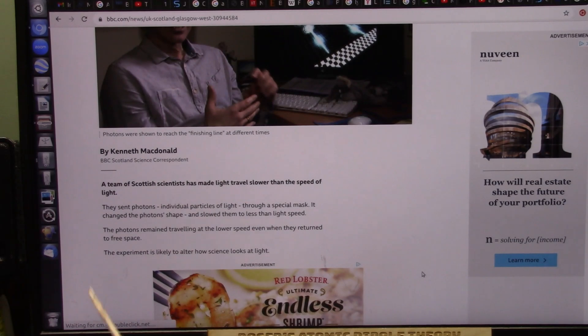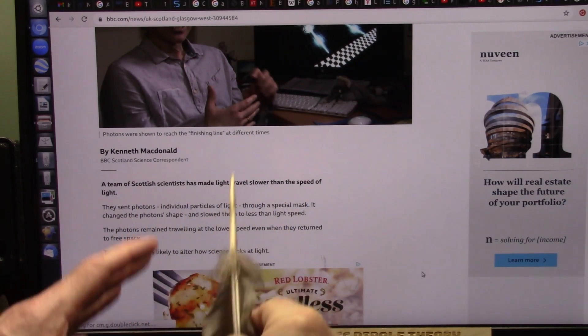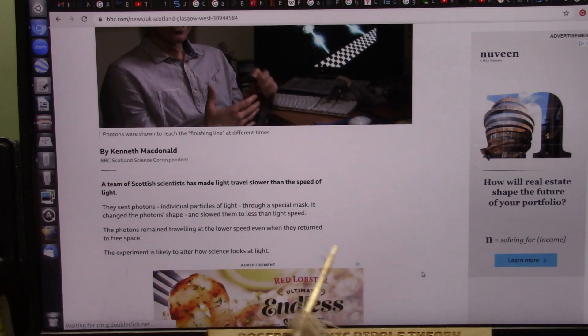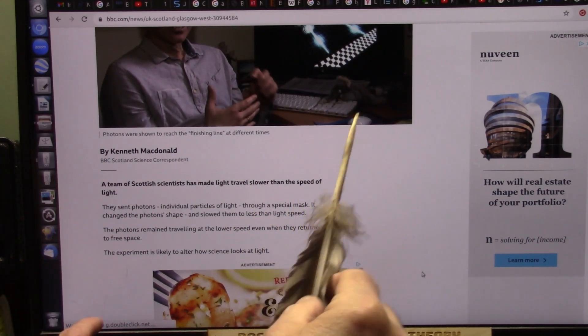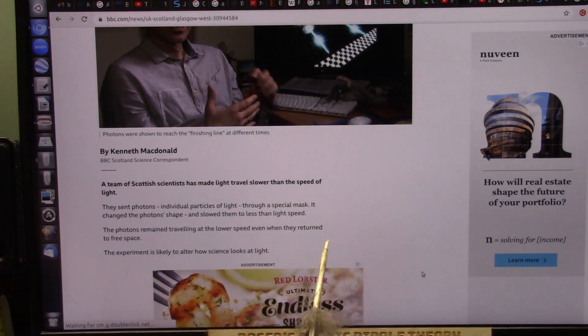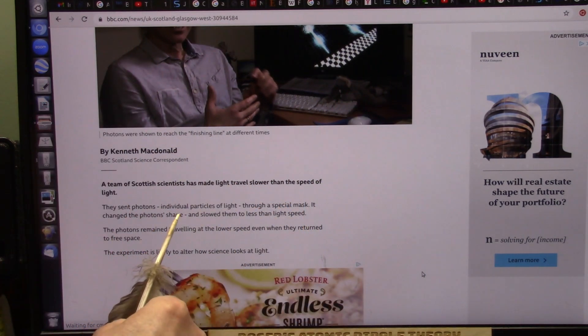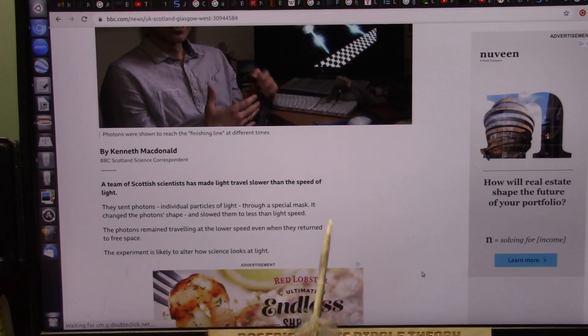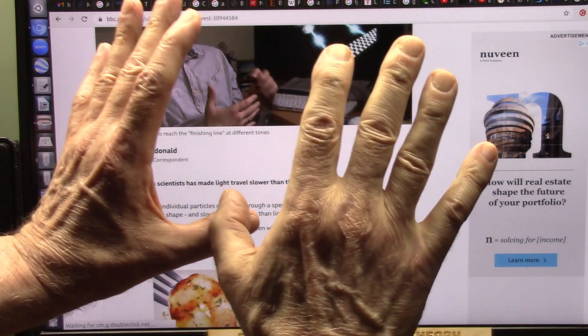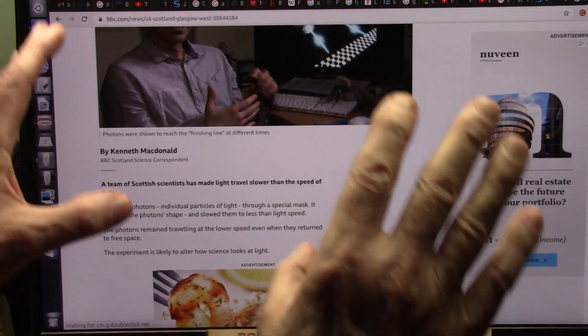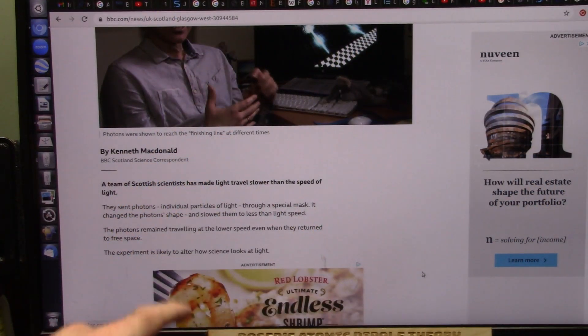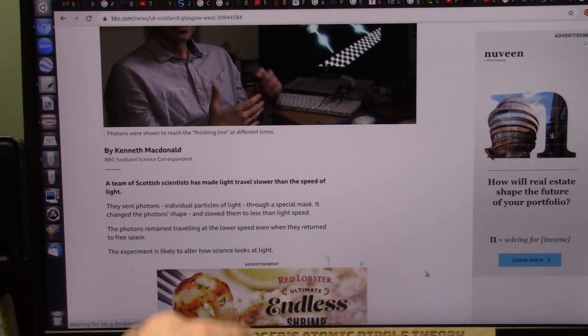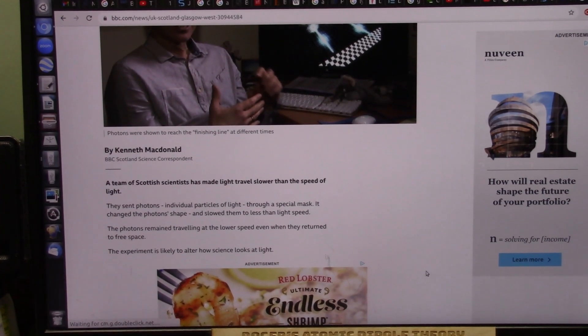They sent the photons, which are individual particles of light, and I have shown those very clearly. They sent them through a special mask, which just means a restriction. It changed the photon shape and slowed them to less than light speed. When they say it changed their shape, it crushed them into photon particles from neutrinos, and then they never returned to their same speed again.